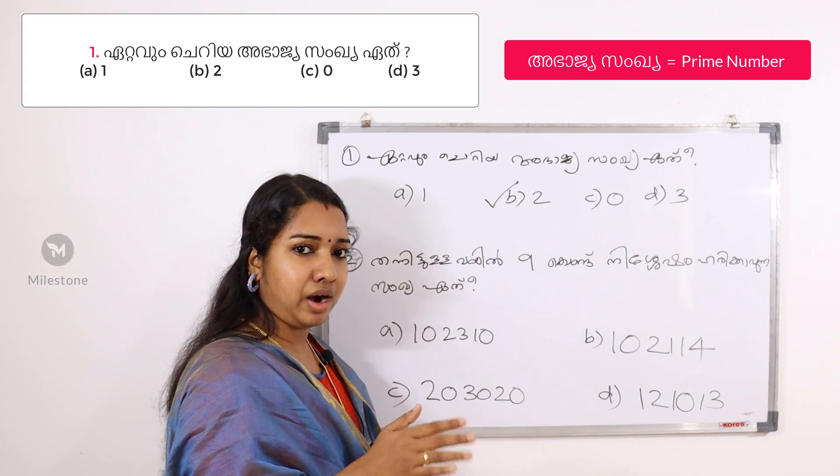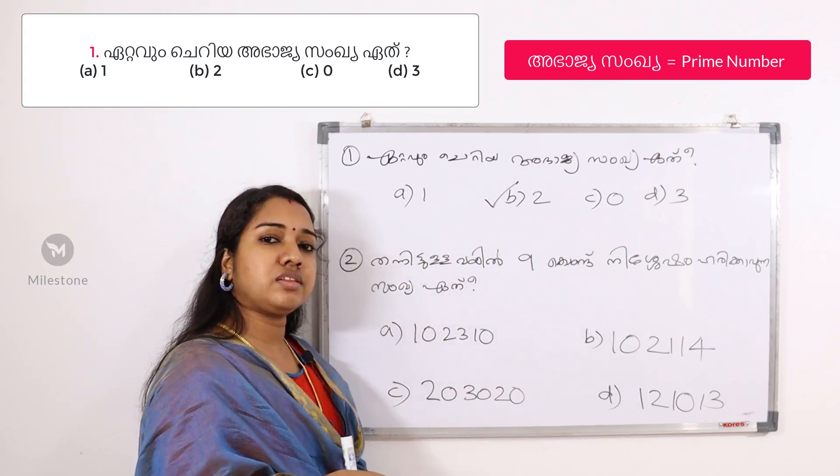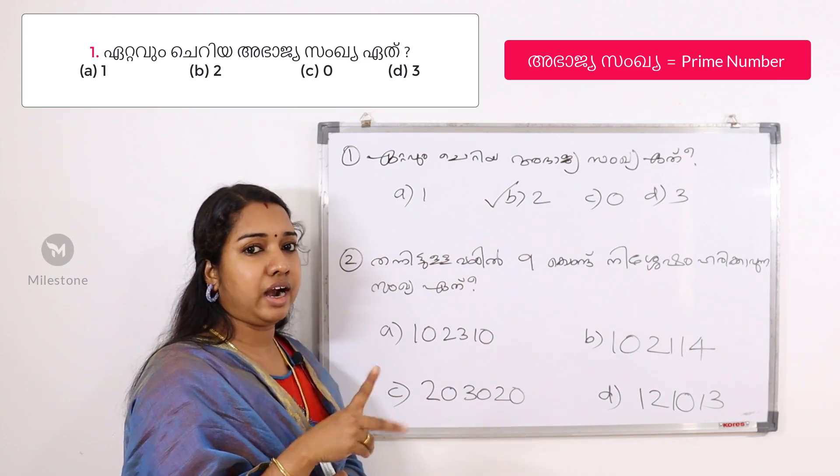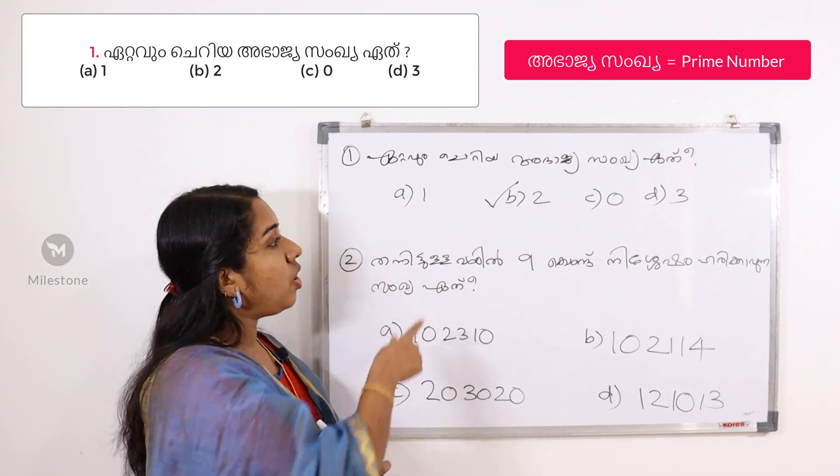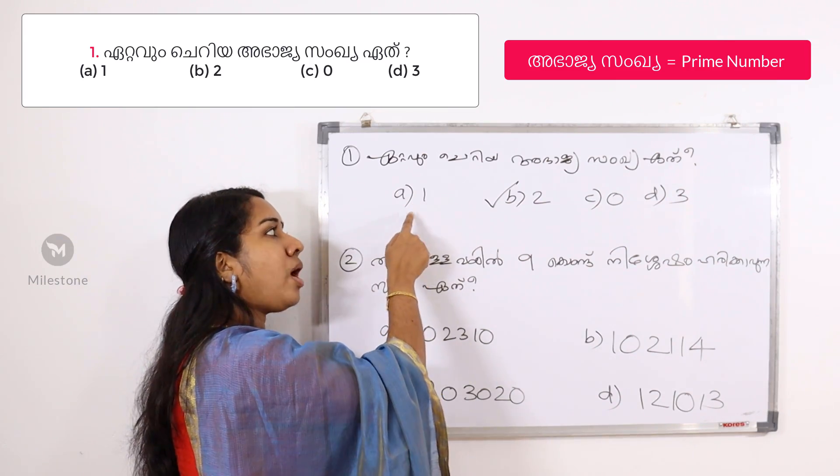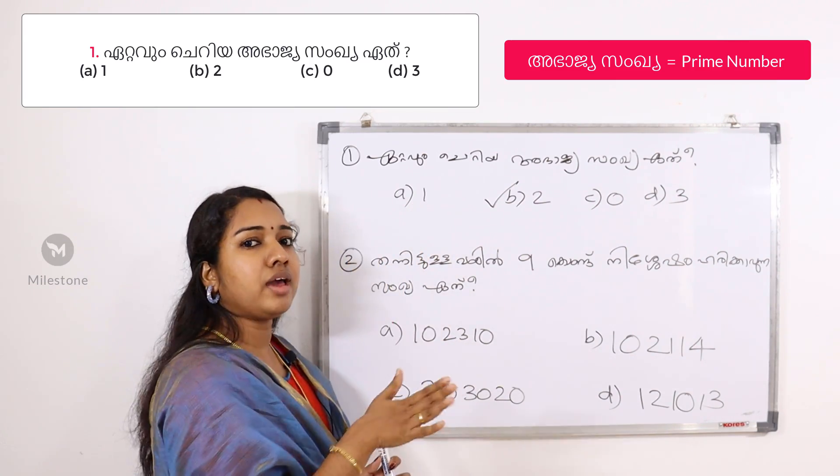The prime number is 2, and the sequence begins: 1, 1, 1, 1, 2, 1.